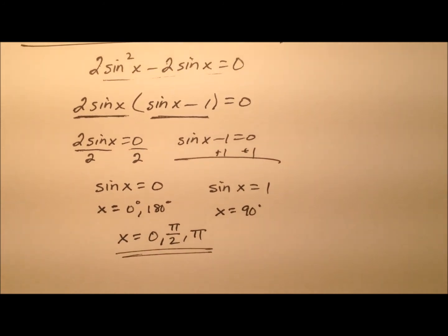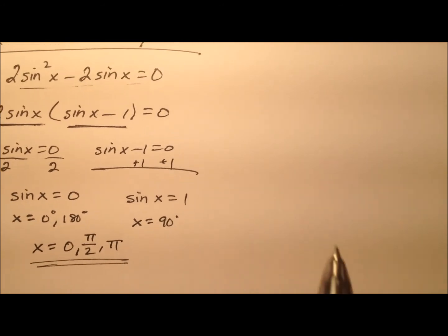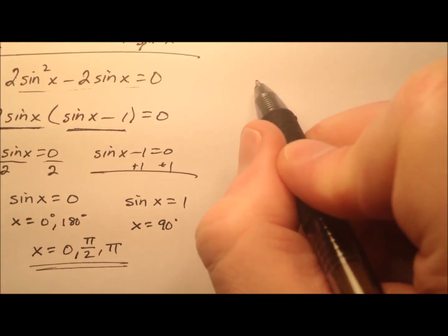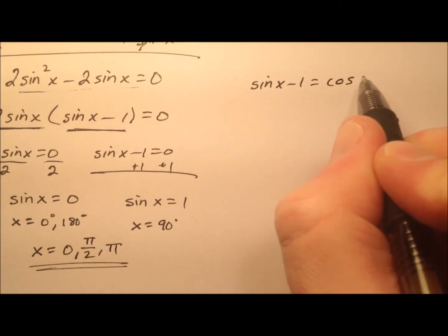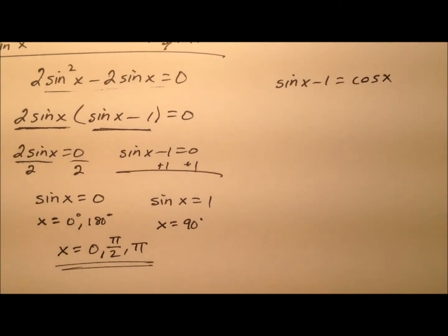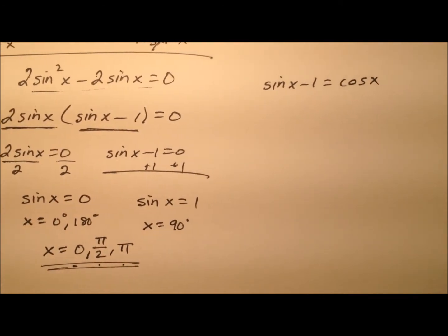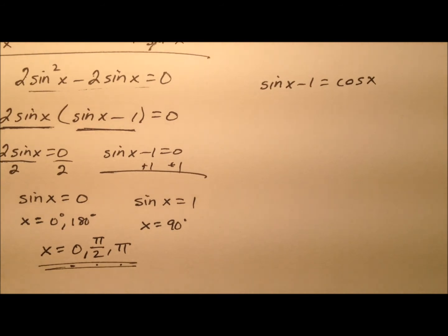But because we squared both sides, we need to be really careful here because I could have an extraneous solution in here. So we need to go back and look at the original equation, which was the sine of x minus 1 equals the cosine of x, and we just need to try all three of these values and make sure that they work.